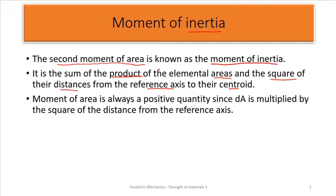I'll explain it with the diagram — how to get the product of the elemental areas and what it means to find the square of the distances from the reference axis to the centroid. We've already talked about centroids, so we will be able to locate the center of the plane figure, then look at the distance from the center to a reference axis. It's quite simple.